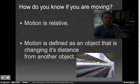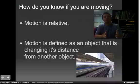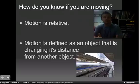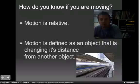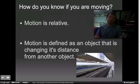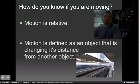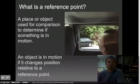So first part, let's get into this. First of all, how do you know if you're moving? Well, all motion is relative, meaning that motion is defined as an object that is changing its distance from another object. So for example, if you're looking at this picture right here in the corner, you see that the train is moving. Well, we would assume that the train is moving, and we know that the train is moving because the station is standing still. That station is called a reference point, and a reference point helps us determine if an object is in motion.